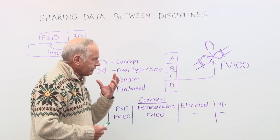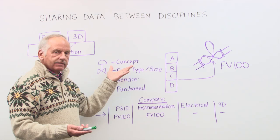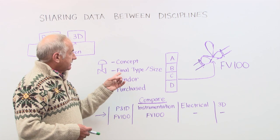If you look, for instance, at the control valve, you have different stages. This is just an example. First, you have your concept on your P&ID. You have to have some control valve for, let's say, flow control. Then you decide on the size and the final type of the valve.